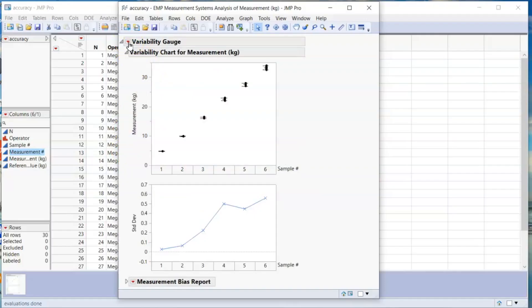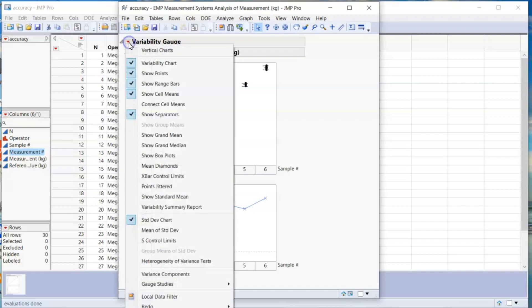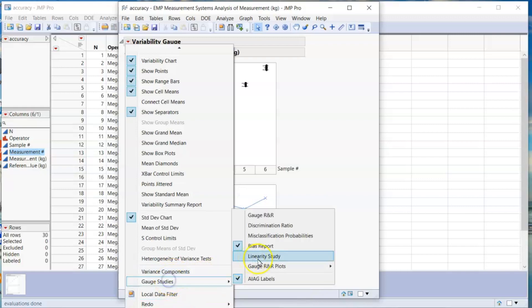After completing the bias analysis, go to the small red triangle next to the variability gauge header. Click on it and select gauge studies and select linearity report.